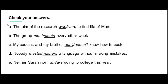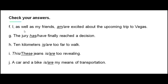Let's check your answers: A) The aim of the research was to find life on Mars. B) The group meets every other week. C) My cousins and my brother don't know how to cook. D) Nobody masters a language without making mistakes. E) Neither Sarah nor I am going to college this year. F) I as well as my friends am excited about the upcoming trip to Vegas. G) The jury has finally reached a decision. H) Ten kilometers is too far to walk. I) These jeans are too revealing. J) A car and a bike are my means of transportation.